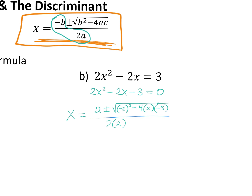When we simplify, plug this into your calculator exactly how you see it, parentheses and all. It has to be parentheses around the negative two. You get 28. So this is two plus or minus the square root of 28 over four.